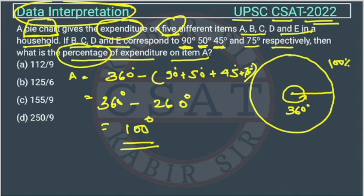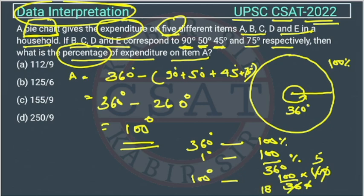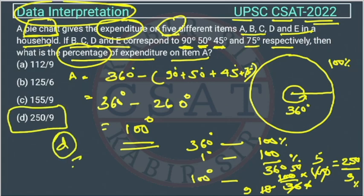But the question is asking for the percentage, so we have to find the percentage. This is also very easy — we will use the unitary method. Since 360 degrees represents 100 percent, 1 degree represents 100/360 percent. We need 100 degrees, so that equals 100 × 100/360. Simplifying: 50/9 × 5 = 250/9 percent. So the answer is option D.